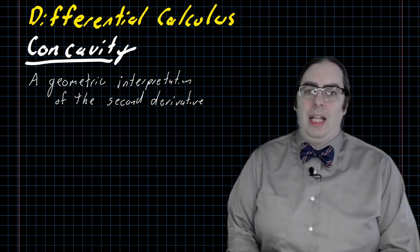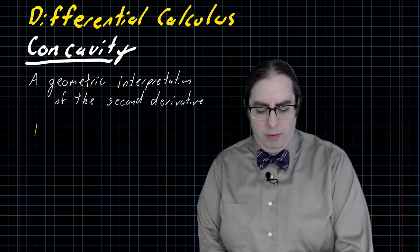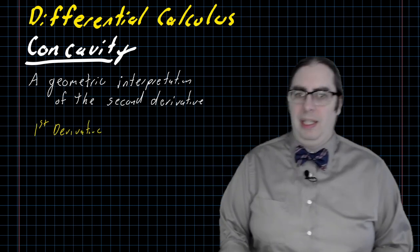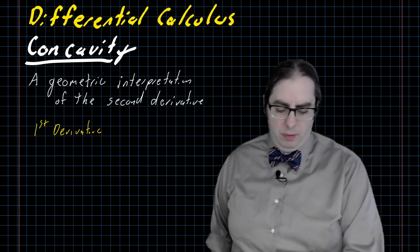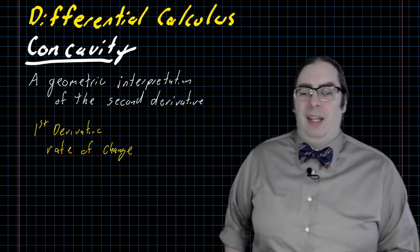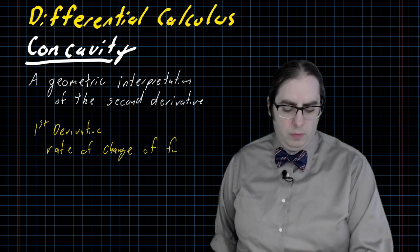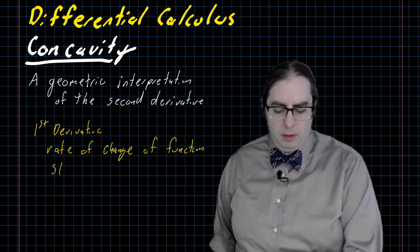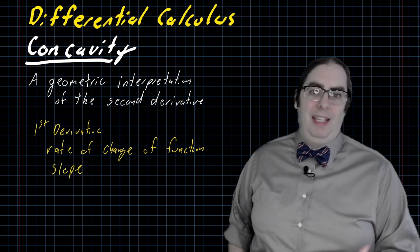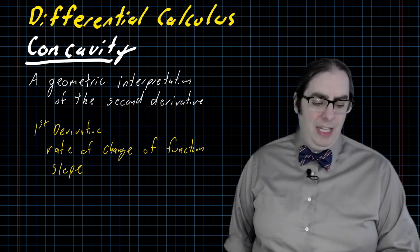We've analyzed the first derivative fairly extensively, right? The first derivative is the rate of change of the function. And we saw that show up as something very similar to slope. And in fact, instantaneously, the rate of change of a function at a point is the slope of the tangent line.